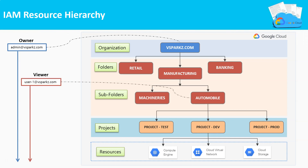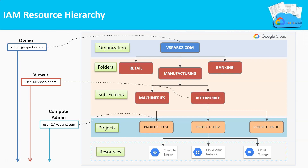Similarly, user1@vsparks.com is assigned with the viewer role to the Automobiles folder, so they can view all resources within the Automobiles folder but cannot access resources in the Machineries folder. We can also assign user identities at the project level, in which case they will have access only to the assigned projects and their resources.